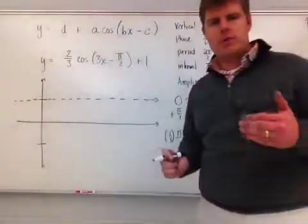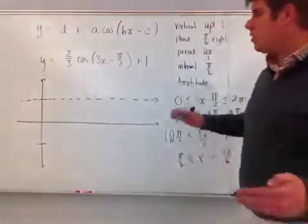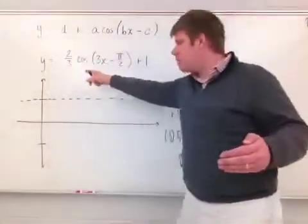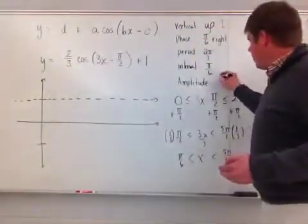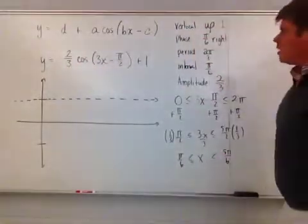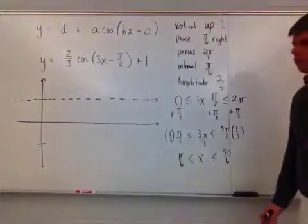Amplitude? Amplitude is the multiplier of your function. So the amplitude here is two thirds. So I now have my amplitude is two thirds. So I now have everything I need to go through and graph.